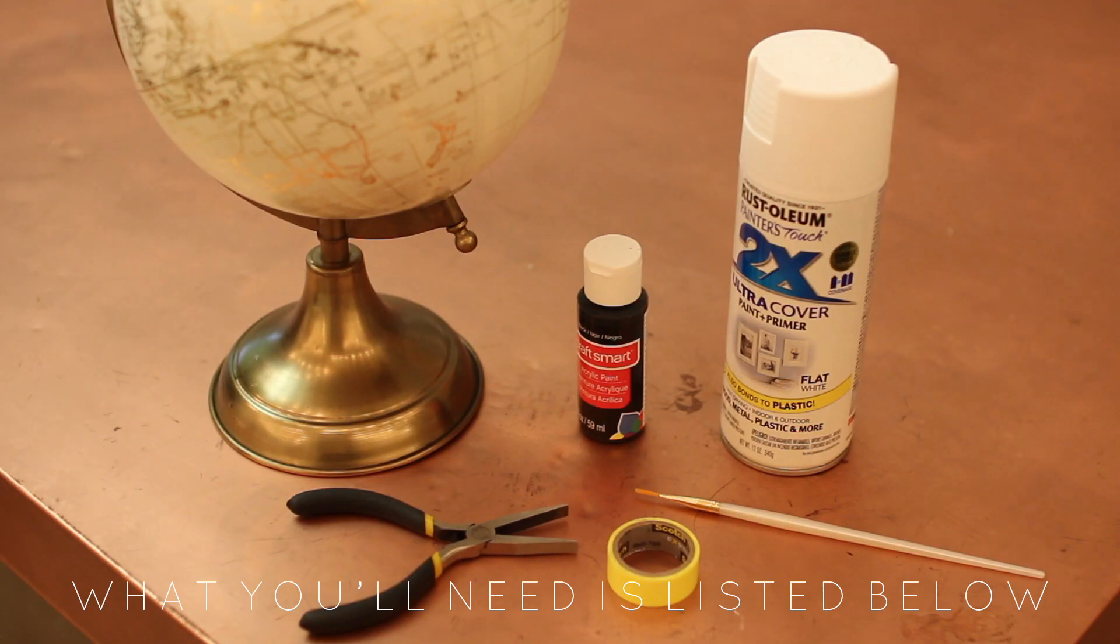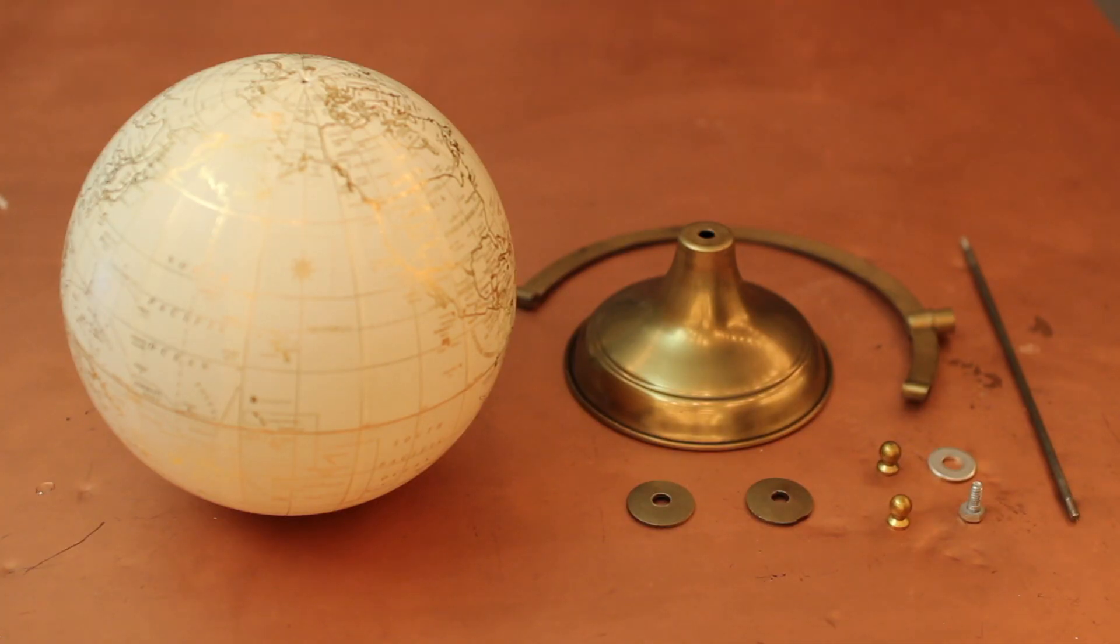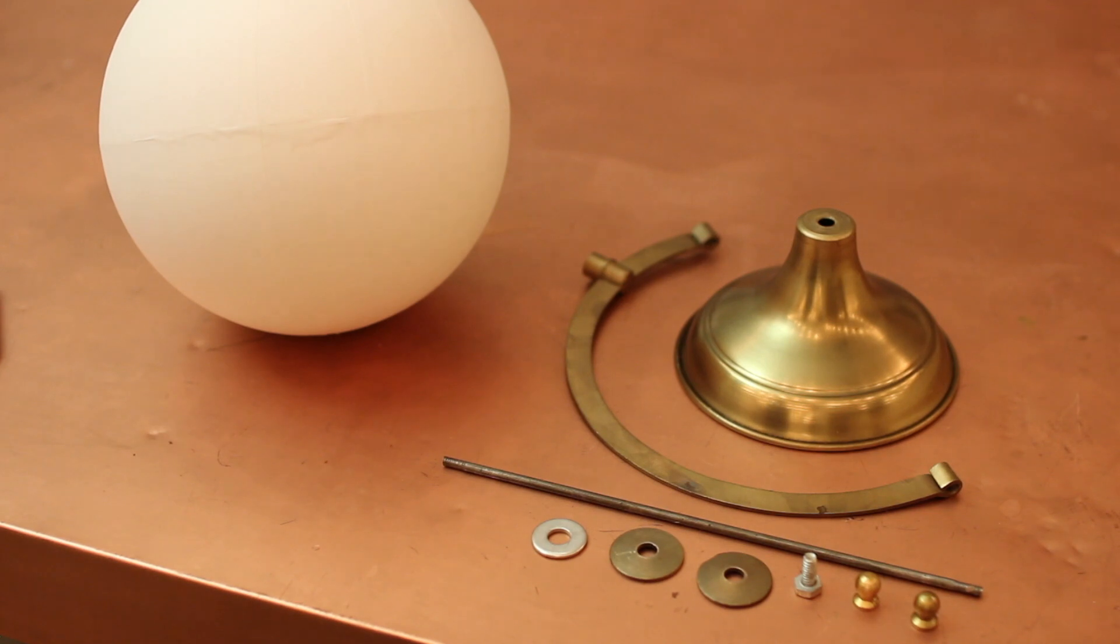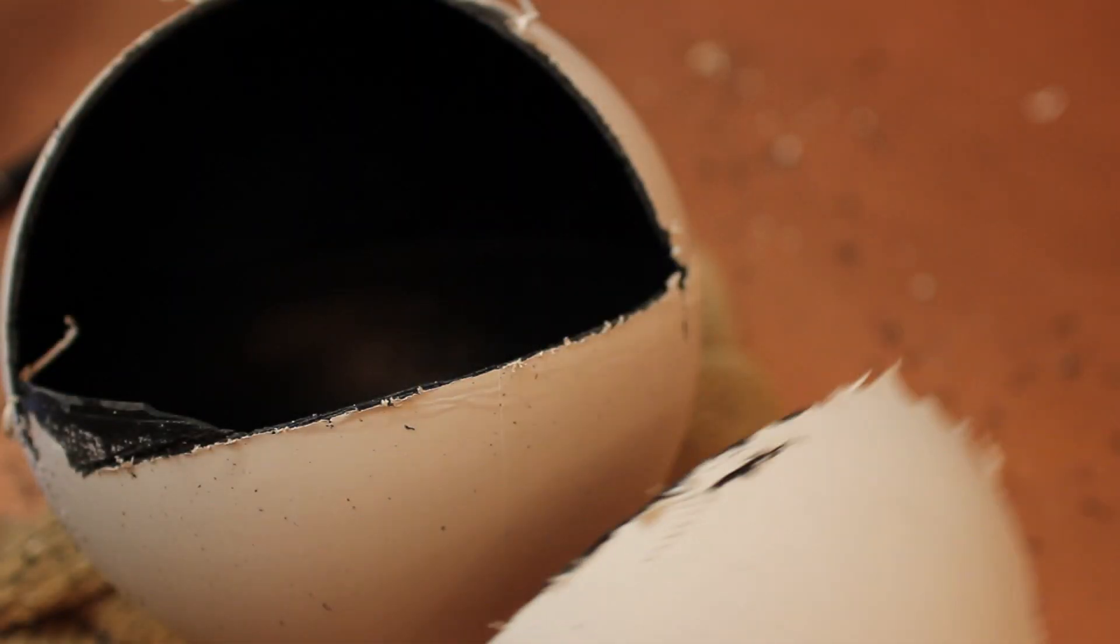So I was going to upcycle this with some paint, paintbrush, washi tape, pliers, spray paint, and a globe, but I didn't need the paint, the paintbrush, or the washi tape because I took it apart. I started spray painting my entire globe white, and then I kind of cut it open with a saw like this to create a planter.